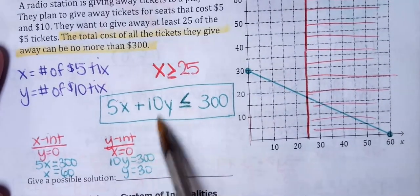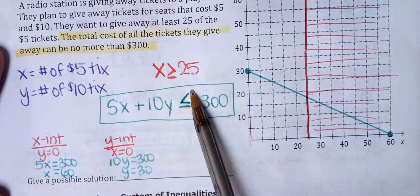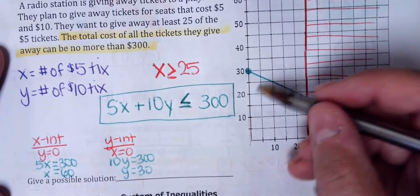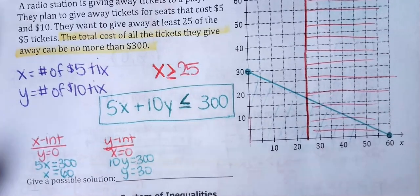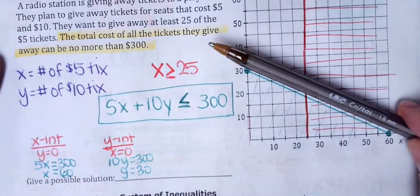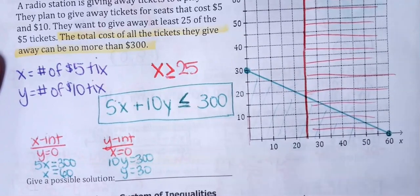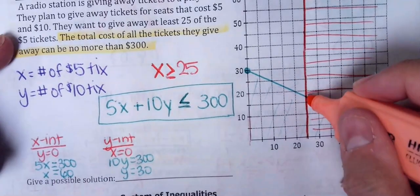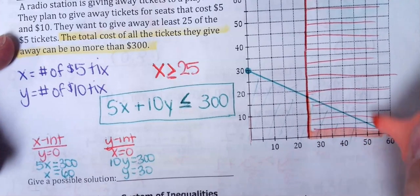Now, I need the amount the radio station spends on these tickets to be less than or equal to 300, so the shading would be below. So the overlap, where we sell at least 25 of the $5 tickets, but we don't spend more than 300, the overlap is going to be this little triangle right in here.